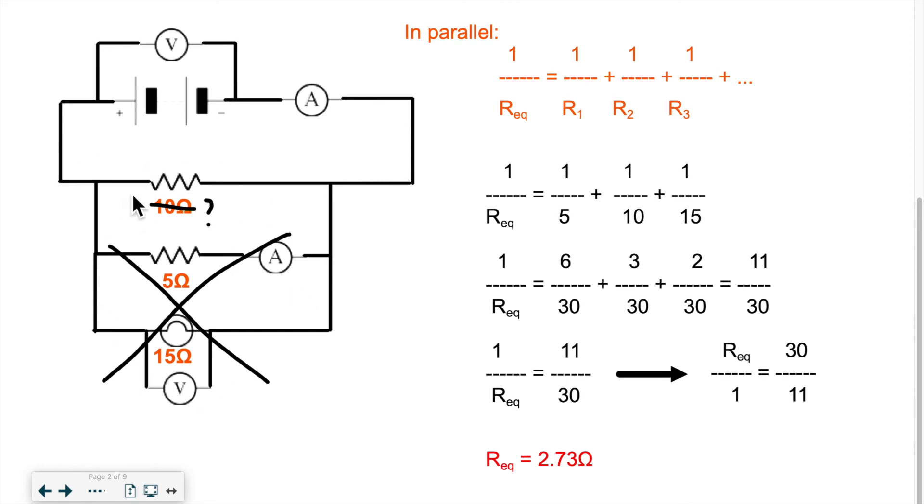So you could replace this whole setup by one resistor with a value of 2.73 ohms, and that would be equivalent to having a setup with three resistors of values 10, 5, and 15. It would do the same job. So that's how you calculate R equivalent.